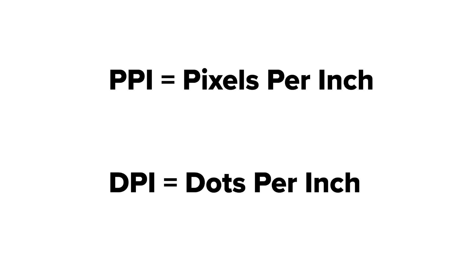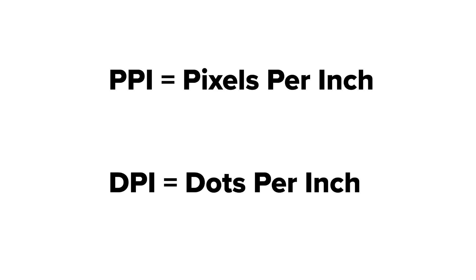PPI — pixels per inch — is how many pixels do you want to jam into one inch of paper. DPI, dots per inch, has nothing to do with the computer. You can control PPI, but you can't control DPI, because DPI is a part of your printer. It's a feature of your printer — how many dots per inch that printer is going to print — and it is not affected by what you chose as your PPI on the computer.